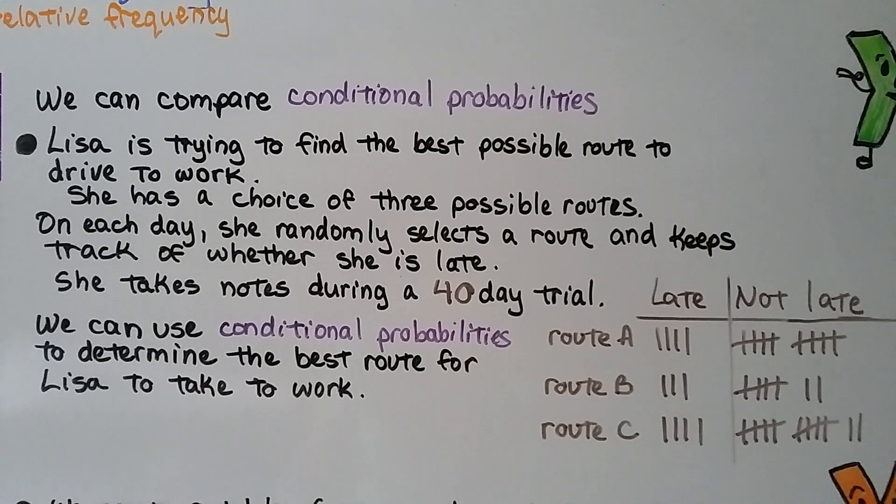We can compare conditional probabilities. When Lisa's trying to find the best possible route to drive to work, then she has a choice of three possible routes. Each day, she randomly selects a route and keeps track of whether she is late. And she takes notes during a 40-day trial. We can use conditional probabilities to determine the best route for Lisa to take to work.